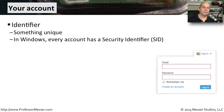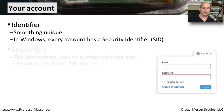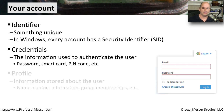One of the most common forms of digital security is your username and your password — the authentication you would use to log into a resource available on your network or computer. In Windows, we also associate something called a security identifier to every single account. You need credentials like a username and a password, but you may be asked for additional information as well — a smart card, a PIN number, or some type of token generator — so that you can finally gain access to those resources.